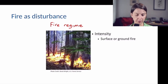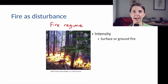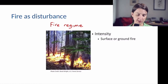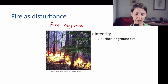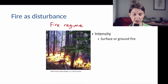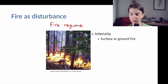Let's start by talking about intensity. We have two major categories. Some ecosystems tend to have low-intensity fires, known as surface or ground fires, where the fire is restricted to the surface and smaller plants and doesn't reach into the canopy of the trees or the larger vegetation.